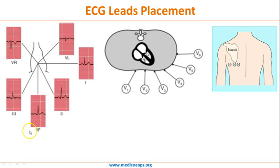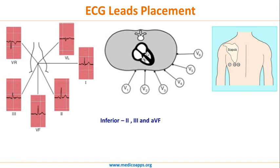To summarize: aVL is from the left side, aVF (foot) is from the inferior side, lead I is from the lateral aspect, and leads II and III are from the inferior aspect. Changes due to pathology in the inferior part of the heart will be reflected in leads II, III, and aVF — these three leads depict changes from the inferior part.